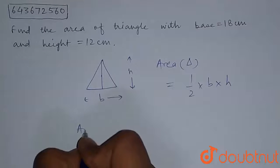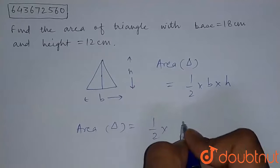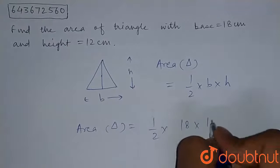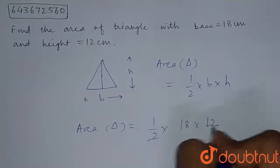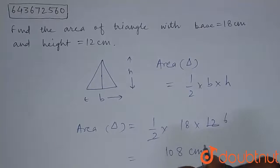So area of the given triangle is equal to half times 18 cm times 12 cm. If we solve this, we get 108 cm square.